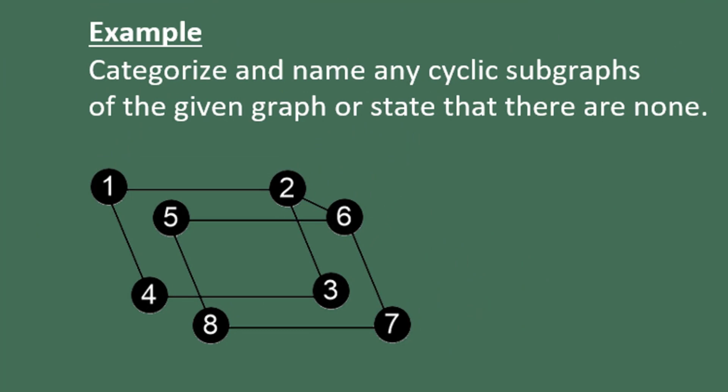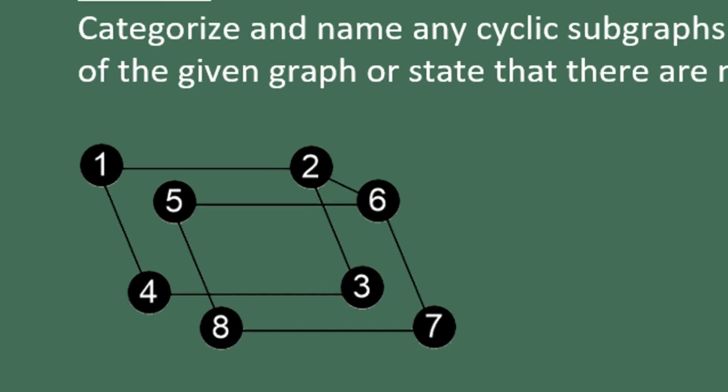In this example, we're going to categorize and name any cyclic subgraphs that we can find, or say that there aren't any. Remember, a cycle begins at one vertex, travels through the graph, never hitting any vertex twice, and comes back to the original vertex.